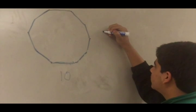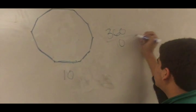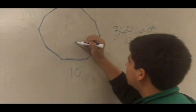I want to find the center angle. To do that I get 360 divided by the number of sides, and it gives me 36.